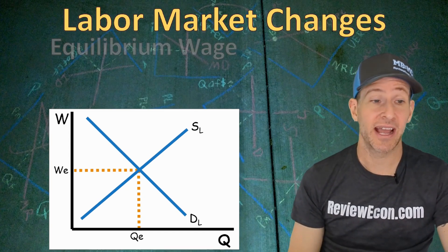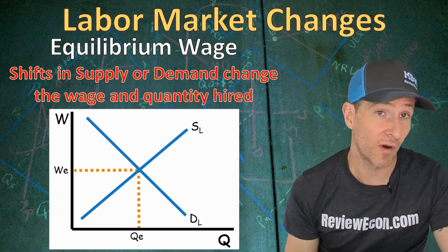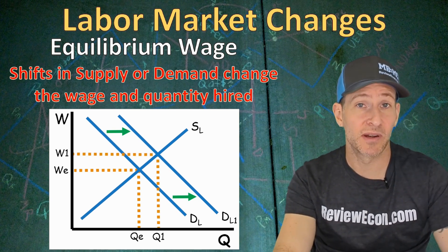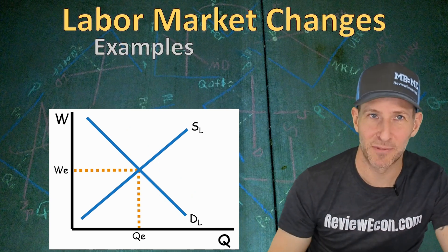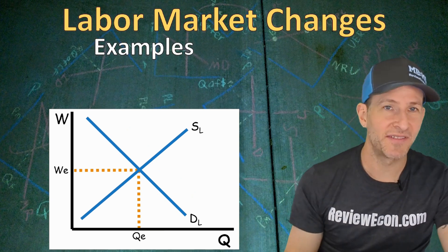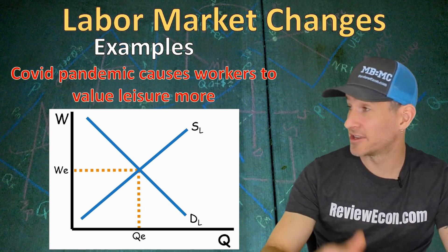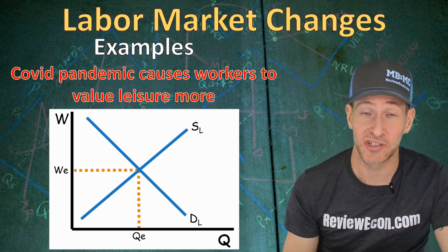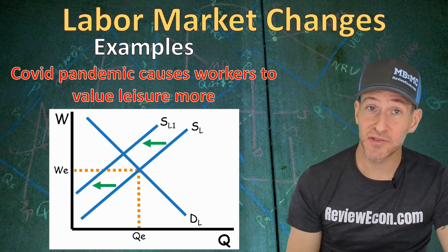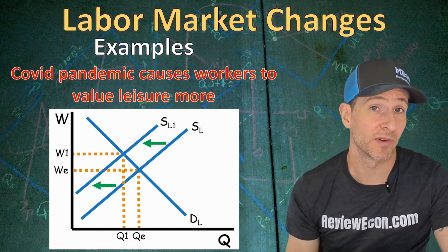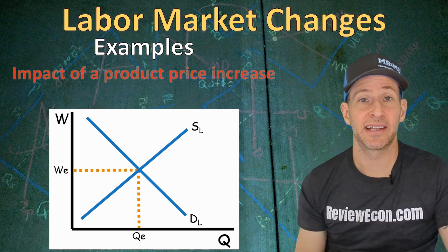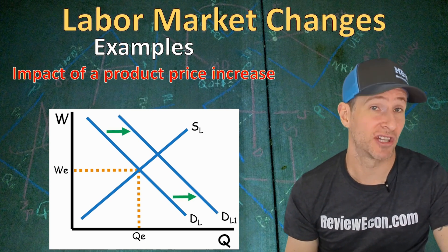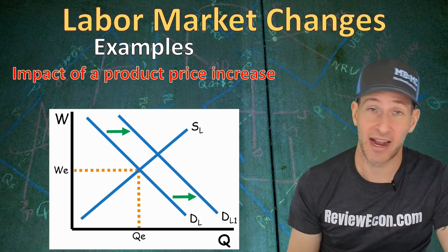Next, let's look at changes within the labor market. If businesses demand more workers, that shifts the demand curve to the right, increasing equilibrium wage and quantity hired. For example, if the pandemic causes workers to value leisure more, that makes workers less willing to work at each wage, shifting labor supply to the left — resulting in an increase in wages and a decrease in equilibrium quantity of workers hired. If the price of the product increases, that raises the marginal revenue product of all workers in the market, shifting demand to the right and increasing both equilibrium wage and quantity hired.